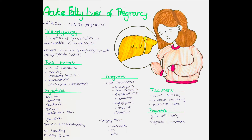Hepatitis serology is usually negative. We can also do different imaging tests. Liver steatosis can be detected by imaging techniques such as ultrasound, CT, and MRI. Ultrasound shows increased echogenicity as well as portal hypertension. A differential diagnosis to keep in mind is HELLP syndrome, viral hepatitis, and especially if the patient presents with a positive travel history, or cholecystitis.